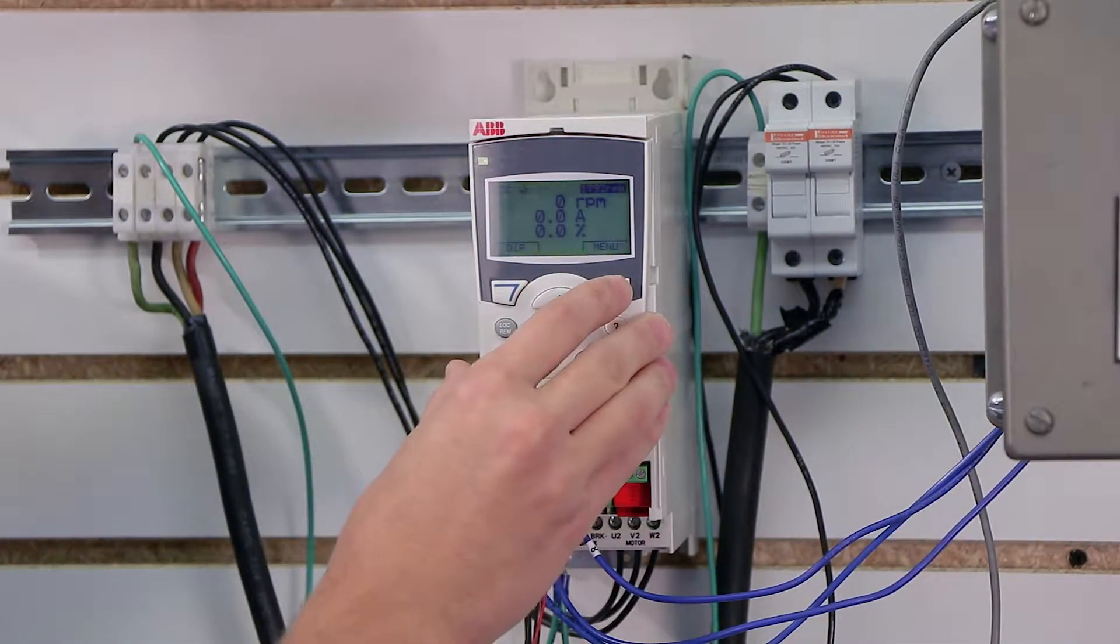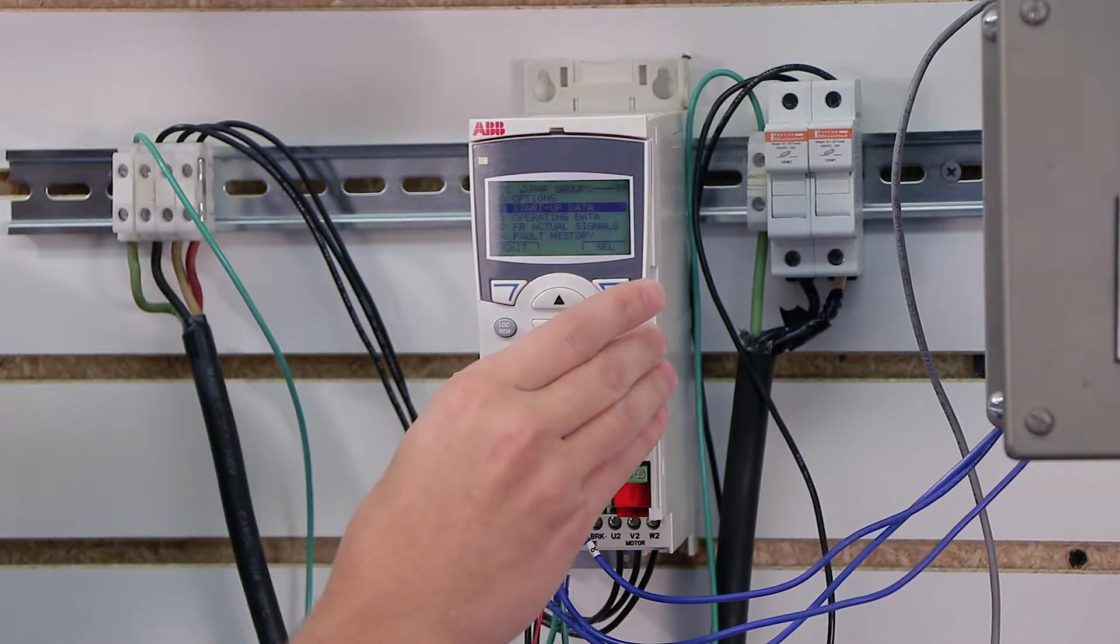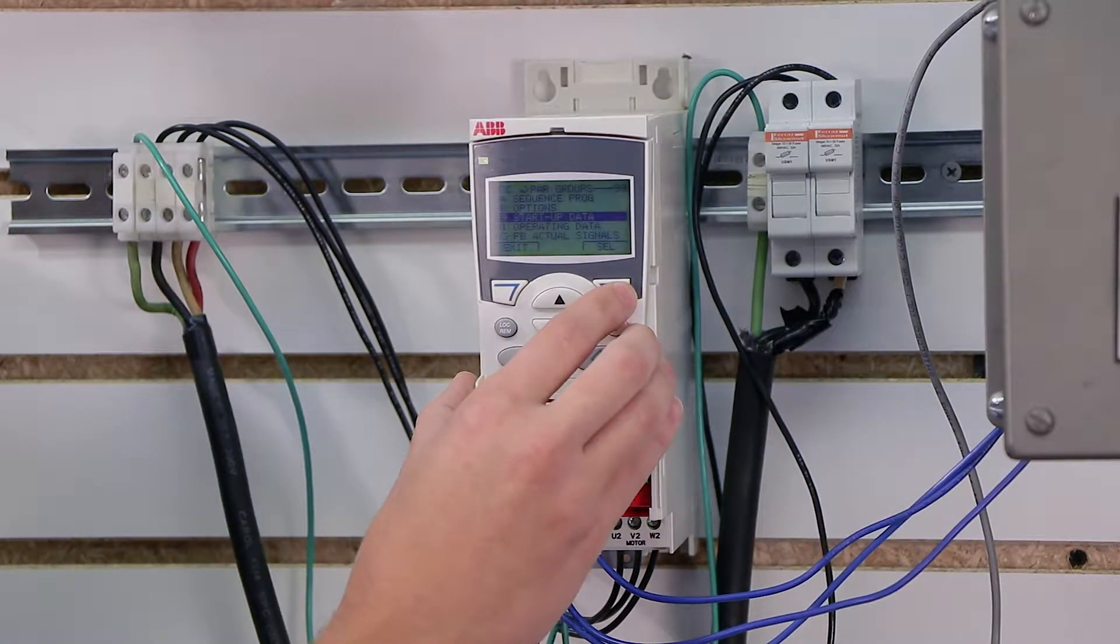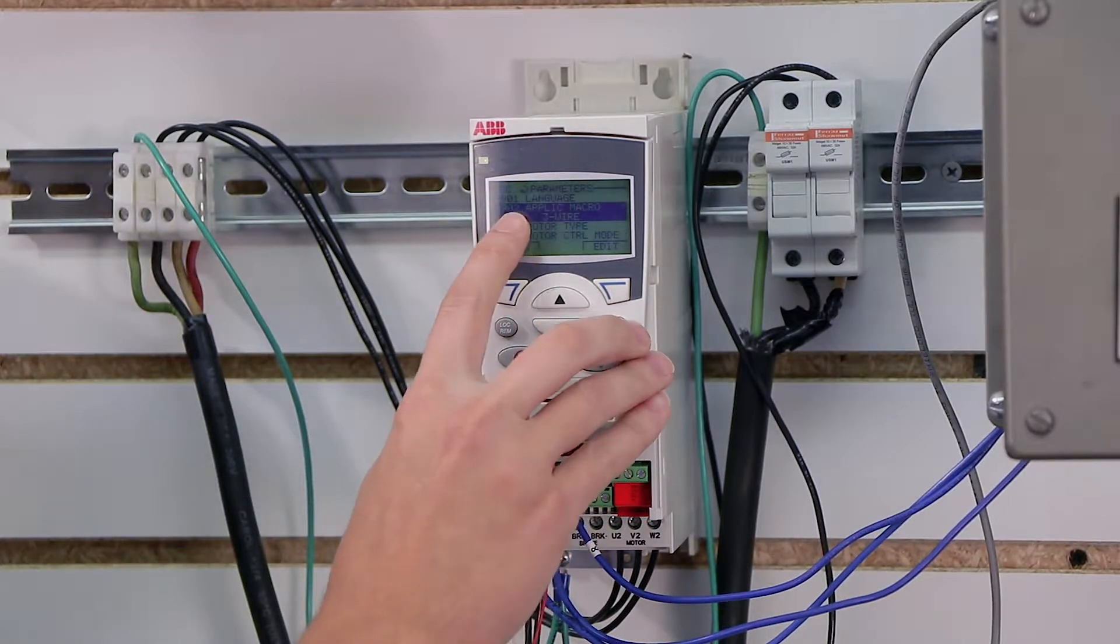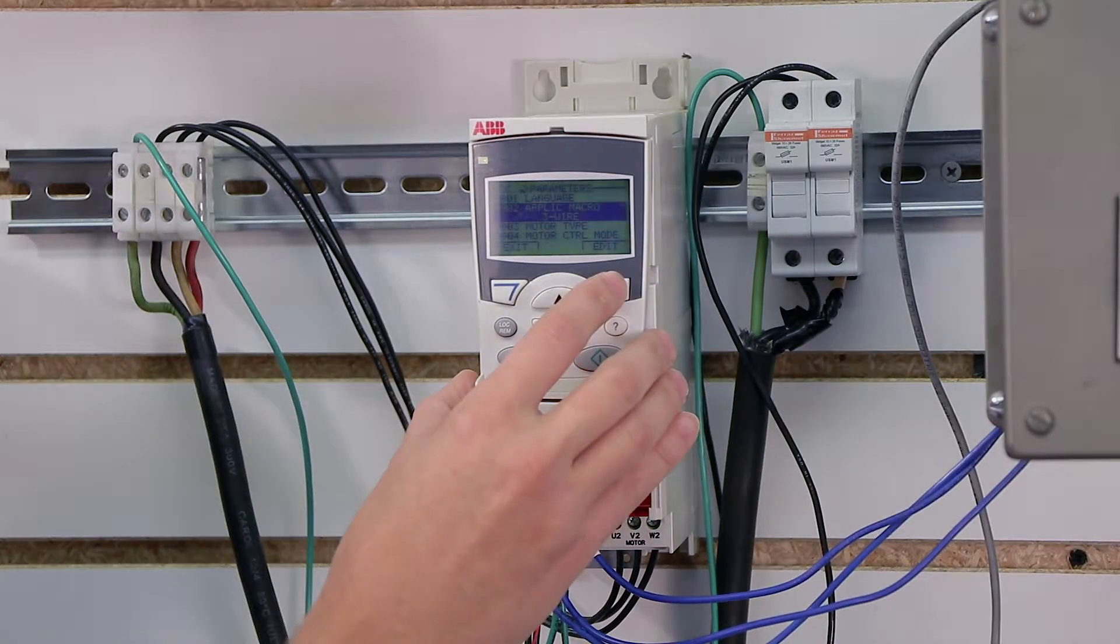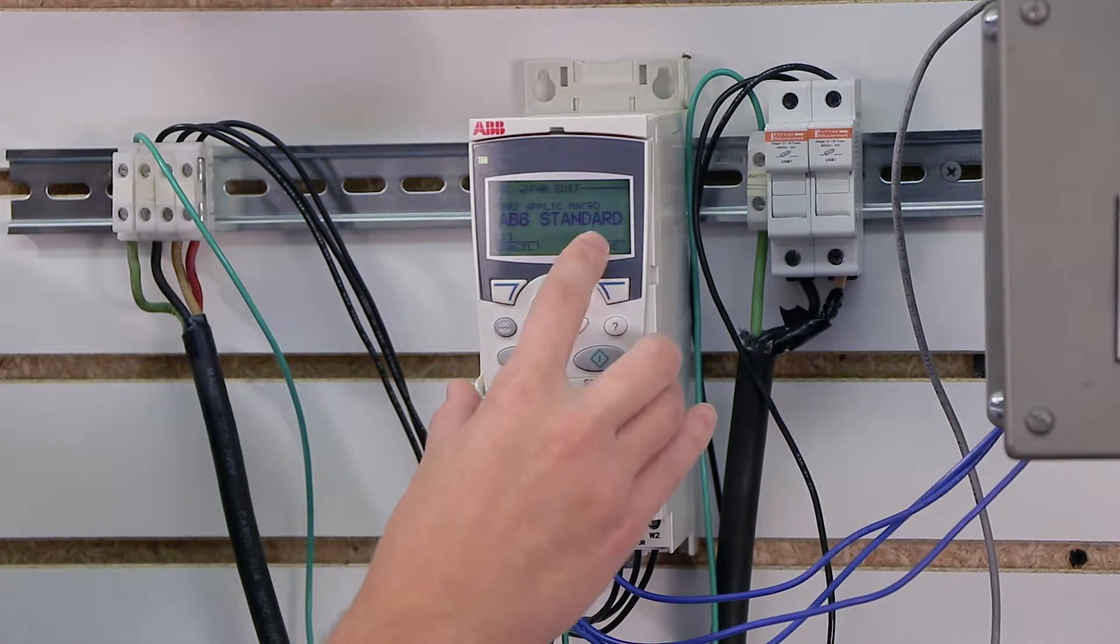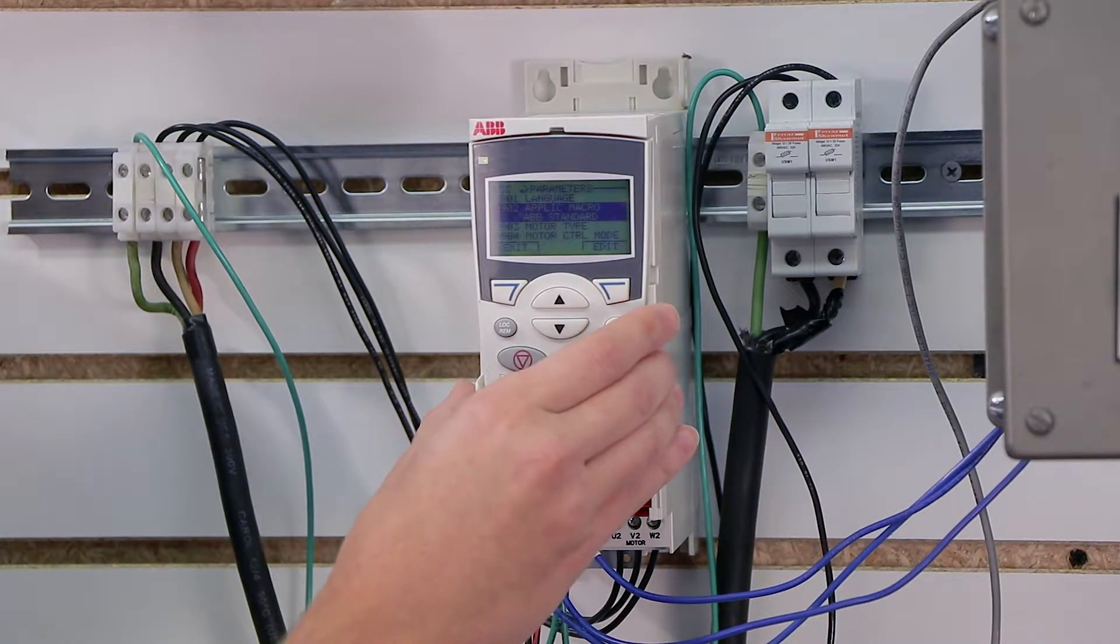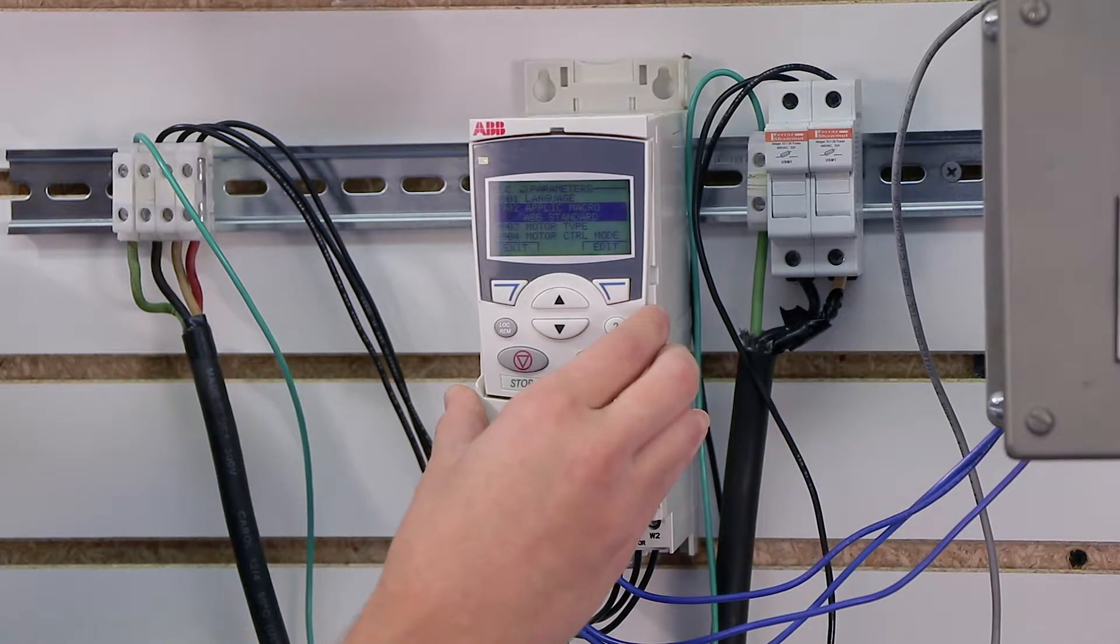So let's go ahead and press the menu button, go to parameters, and press enter. Then we're going to scroll down to parameter group 99 again, and we're going to select the select button. We're going to scroll down to parameter 9902, application macro, and click edit. And we're going to change it from three-wire back to ABB standard, and click save. You may or may not have heard that, but it does make a slight clicking sound when you switch the macro. That's fine.